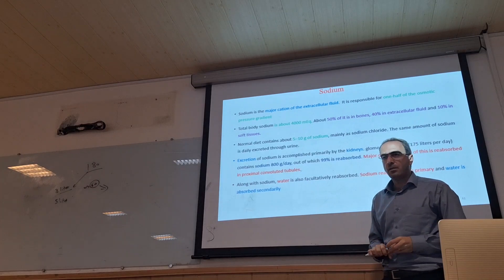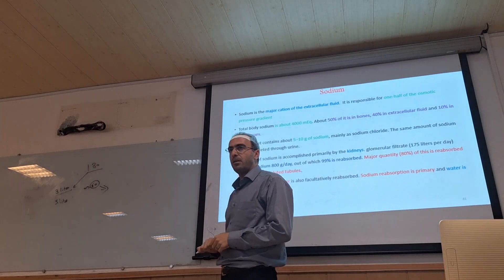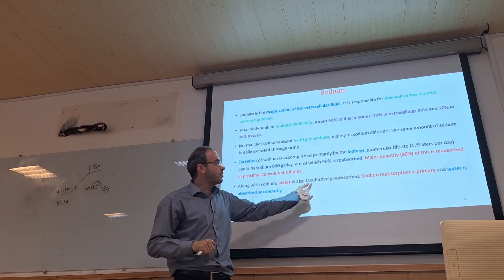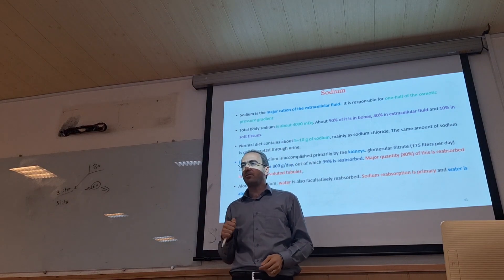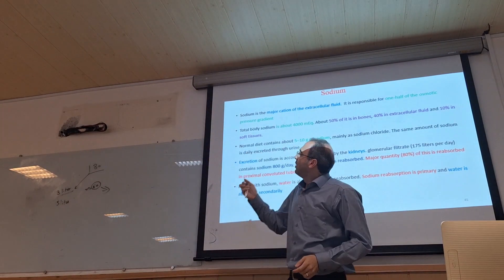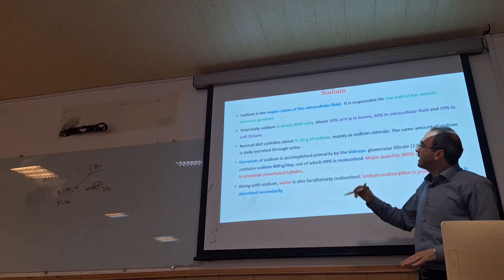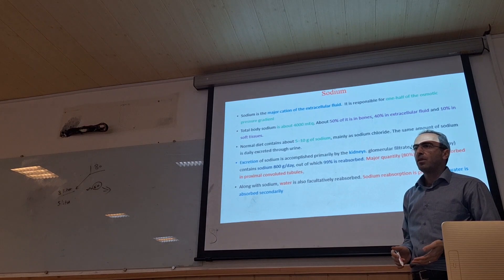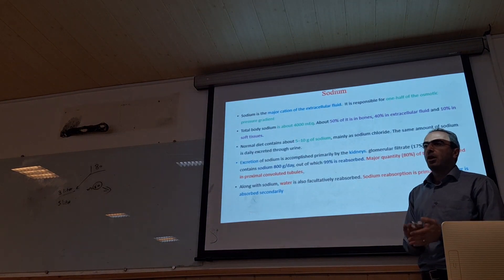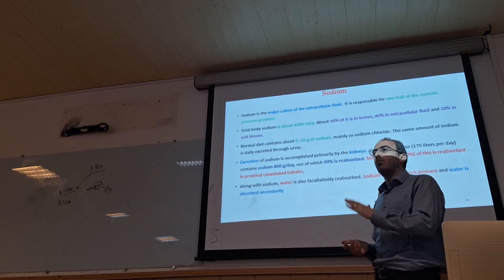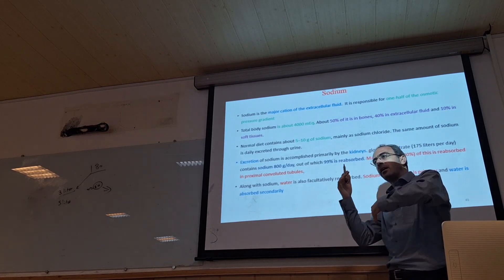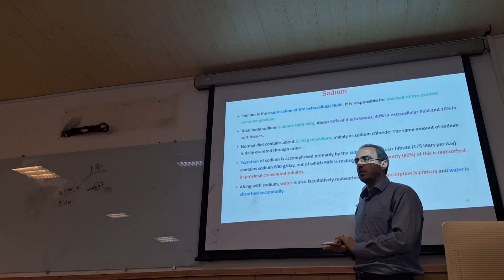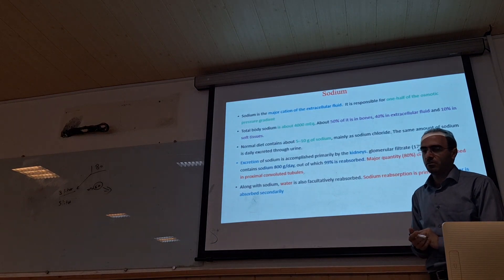Along with sodium, we also reabsorb water. First we reabsorb sodium, then water is reabsorbed. So depending on sodium, we can decrease or increase sodium excretion by the kidney. If we need to increase blood pressure, we decrease sodium excretion by the action of aldosterone. And otherwise, when we need to decrease blood pressure, we increase sodium excretion by inhibition of aldosterone action.